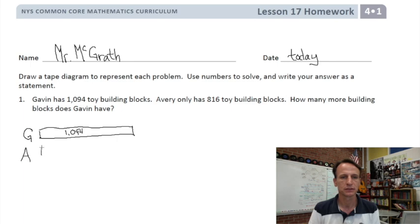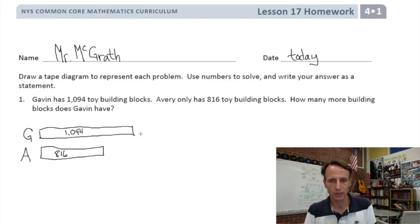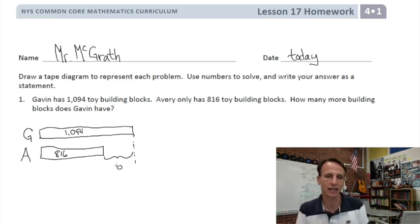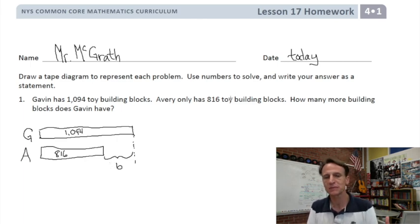There's Gavin, and we know he has 1,094. I could write above with a bracket right inside like that. And then we have Avery. We're comparing, we're trying to see how many more. That's why I'm drawing two separate tapes for them. Because, you see, especially as we move on here, this type of diagram just works better when you're comparing.